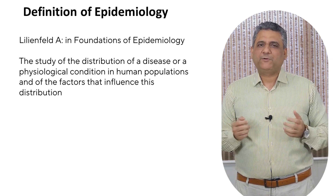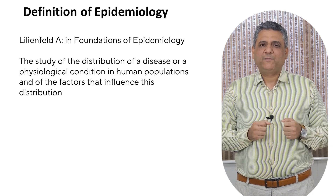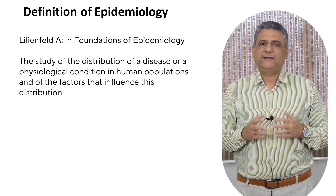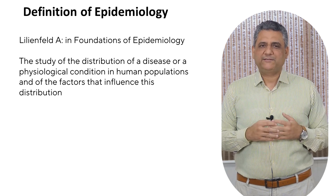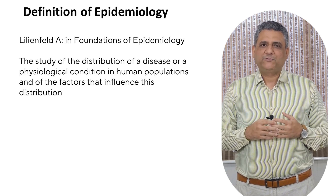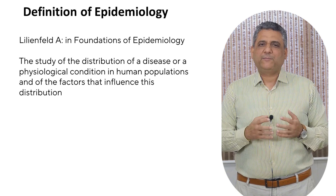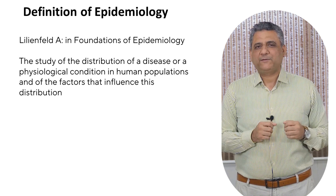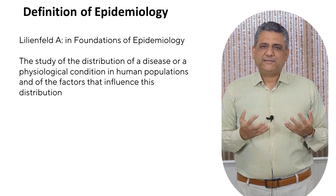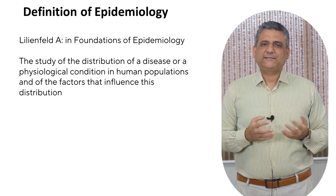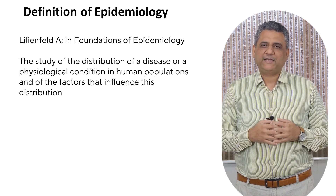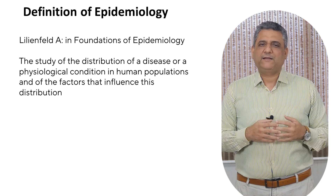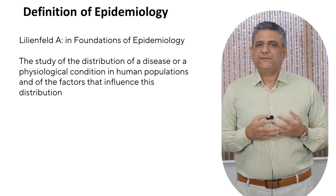Second, the factors that influence this distribution — meaning why these patterns exist. This is where we look for determinants: exposures, behaviors, environmental or biological factors that explain why some groups are affected more than others. In simple terms, Lilienfeld reminds us that epidemiology is not just about counting cases; it's about understanding patterns and the reasons behind them. It connects the what with the why, helping us uncover causes and design better prevention strategies.